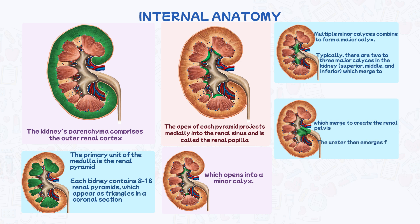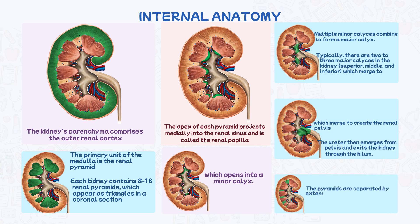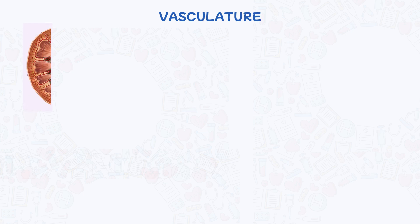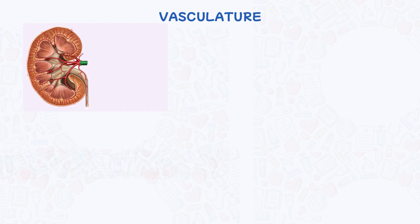The ureter then emerges from the renal pelvis and exits the kidney through the hilum. The pyramids are separated by extensions of the cortex known as the renal columns. Vasculature: each kidney receives blood from a single renal artery.